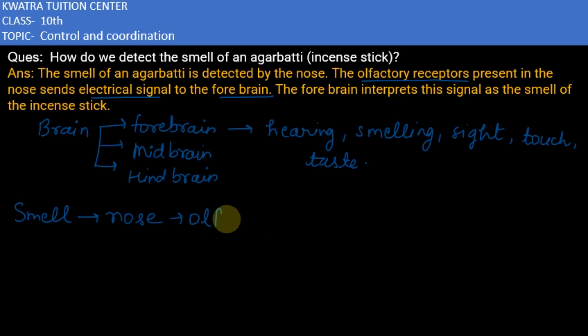So the nose has olfactory receptors. They sense the smell and send signals to the forebrain. The forebrain then interprets the signal as the smell of the incense stick. This is how we detect the smell of an agarbatti. Thank you.